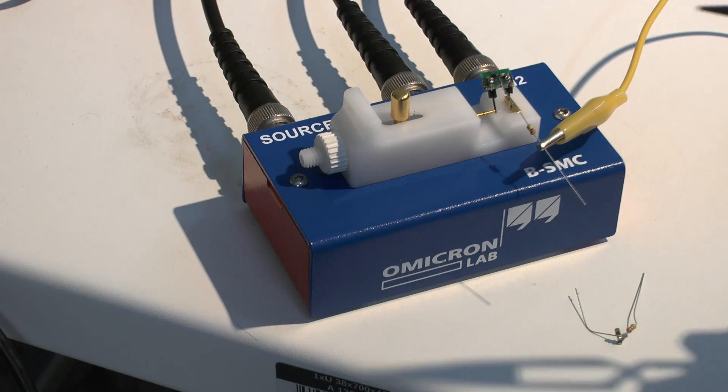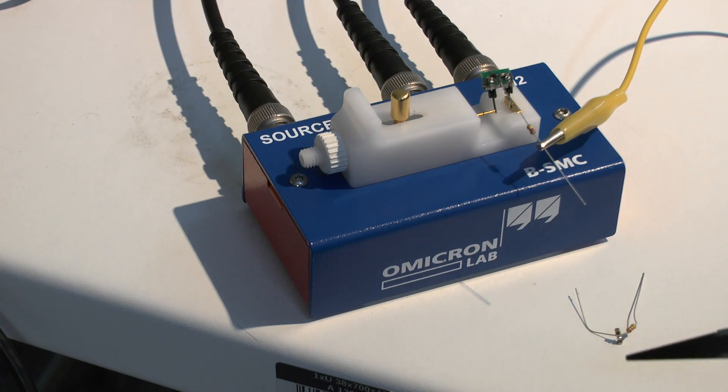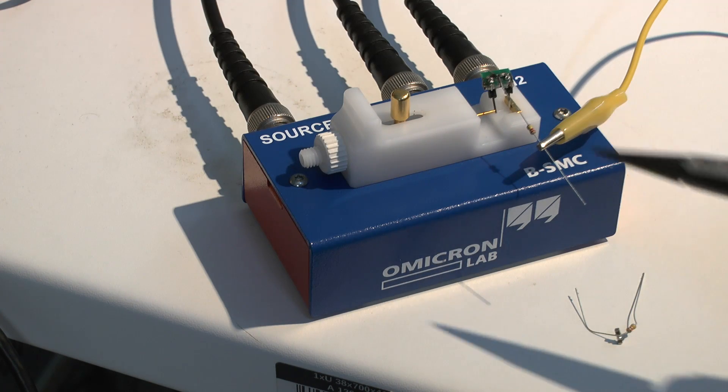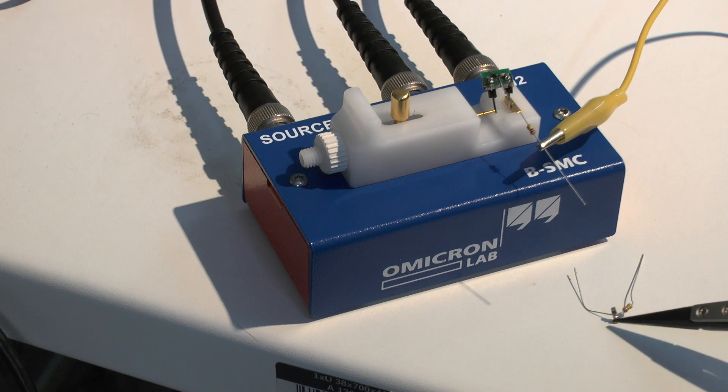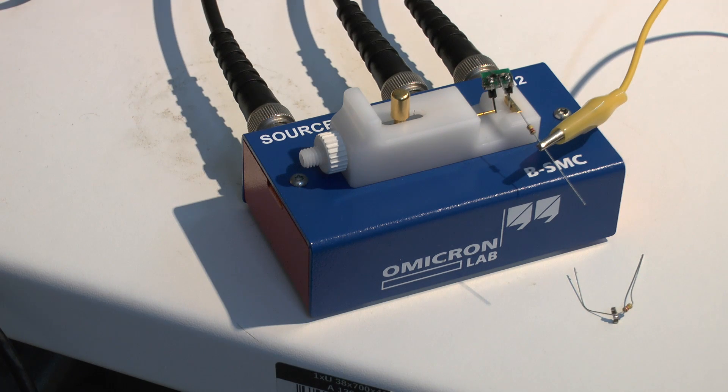And in the case of these tantalum capacitors, I had to build a little adapter, because with them the solder pad is only at the very bottom. In the case of the normal surface mount MLCCs, I just built a flying hedgehog, like this, and then just plugged the hedgehog in here.